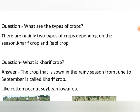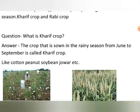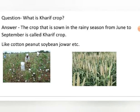What are the kharif crops? The crops which are sown in the rainy season from June to September are called kharif crops. Examples are cotton, peanuts, soybean, and jowar.